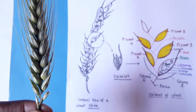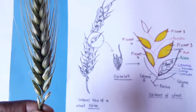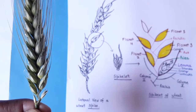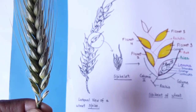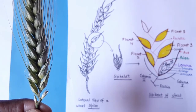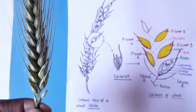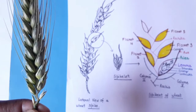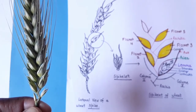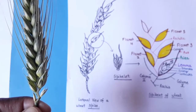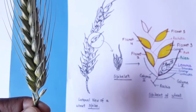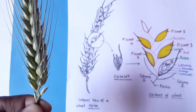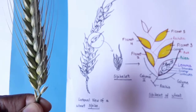Hello everyone, welcome to my channel all about biology. This is Jyoti Barma, and today we will discuss a very important topic: spike of spikelet and its related terms. Most students get confused with terms like spike, spikelet, rachis, rachila, lemma, and palea. In this video we will clear your concepts related to these terms, using the example of Triticum aestivum.